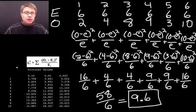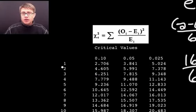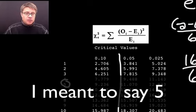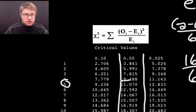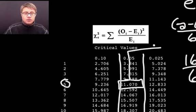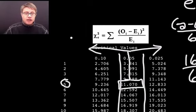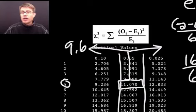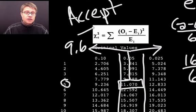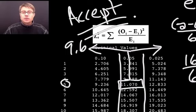Now we go to the chart. There are 6 different outcomes so degrees of freedom is 6 minus 1, which is 5. In the 0.05 column the critical value is 11.07. Our chi-squared value of 9.6 is lower than 11.07, so even though we had a lot of sixes we still need to accept the null hypothesis — there is no statistically significant difference between what we observed and what we expected.